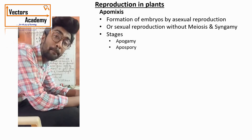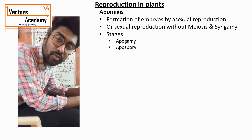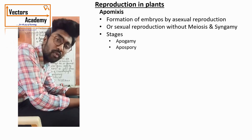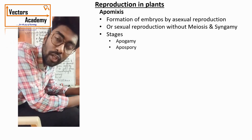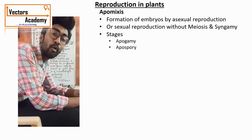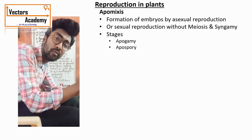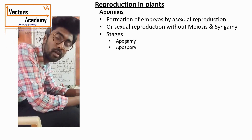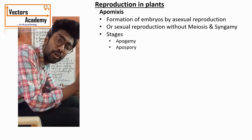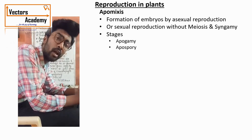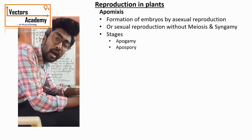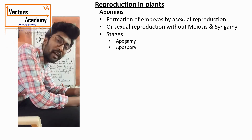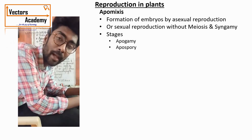Apomixis has two stages: apogamy and apospory. In apogamy, a single gametophytic cell or organ produces an embryo-like structure without fertilization — that is, without the gamete there is formation of an embryo. In apospory, a diploid sporophyte cell does not undergo meiosis but instead produces a diploid gametophyte directly.